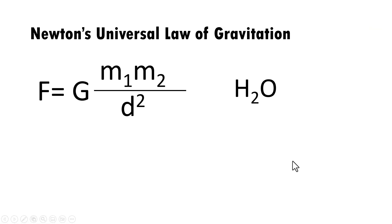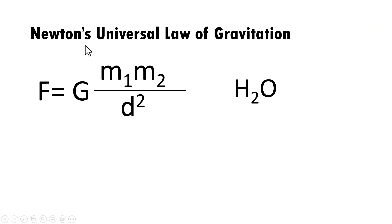Now you see the result. Now let us write the subscript. Let us say you want to write Newton's universal law of gravitation formula, which is like this, or you want to write the formula for water. Once again, as we did earlier, we write the text the normal way like this.